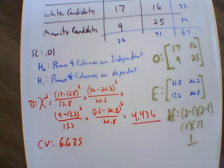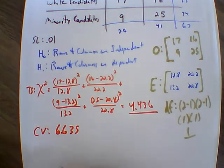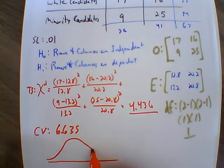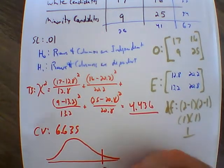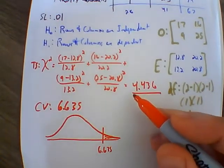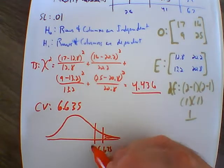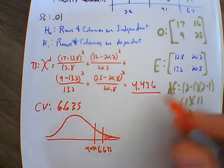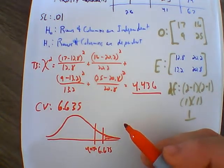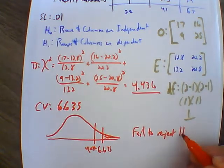Our test statistic of 4.436 is smaller than our critical value of 6.635. In a right-tail test, if our test statistic were to the right of 6.635, that means an extreme value — we'd reject the null. But we're at 4.436, which falls in the non-rejection region. So we fail to reject the null hypothesis.